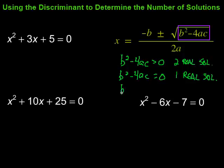Finally, the third thing that can happen is the discriminant, the b squared minus 4ac, can be less than zero. And in that case, there will be no real solutions.